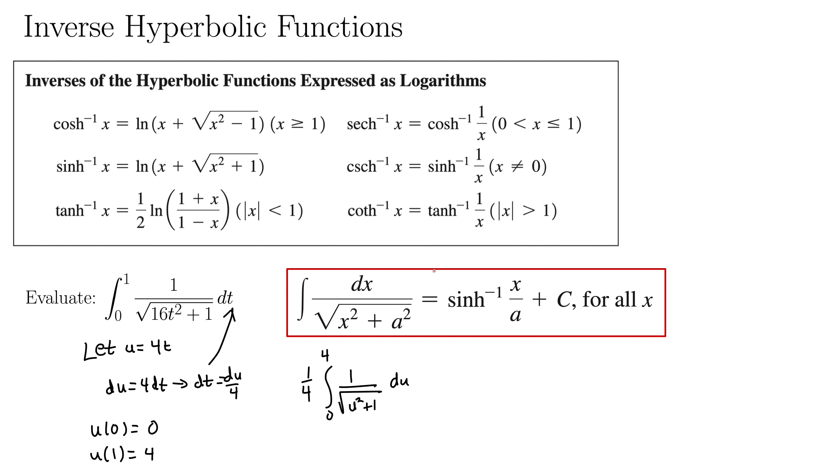So now we'll hit it with this integral formula. What a fancy thing. What a fancy formula. So this gives 1 fourth inverse hyperbolic sine, that's quite a mouthful, of x. Well, in this case that's u over a. Well, a is 1 in this case. Evaluated from 0 to 4.